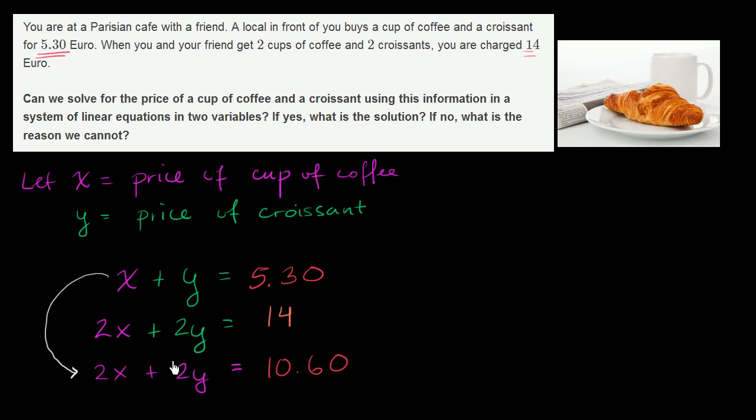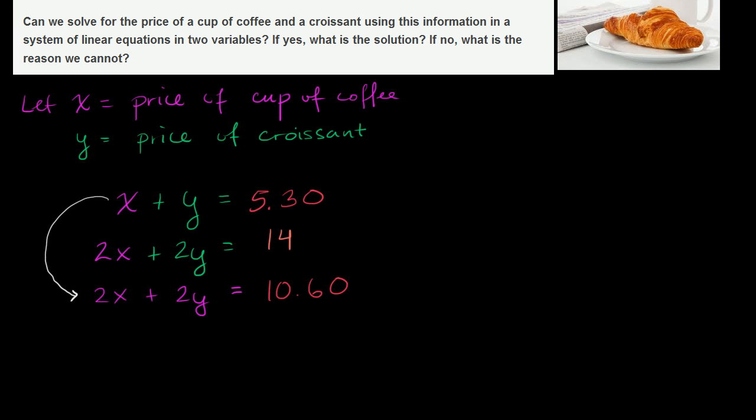And we can verify that there's no x and y that's going to satisfy this. And even logically, it makes sense. Here, 2 times an x plus 2 times a y is 14. Here, 2 times an x plus 2 times a y is 10 euro 60. And we can even show that mathematically, that this doesn't make sense.